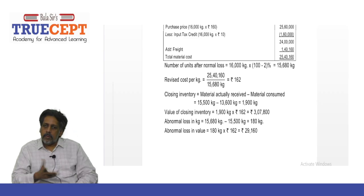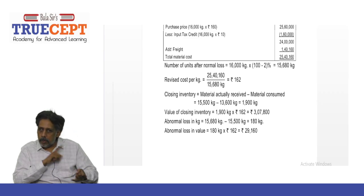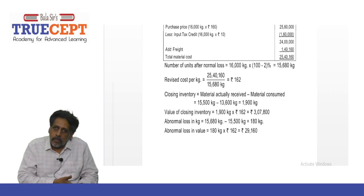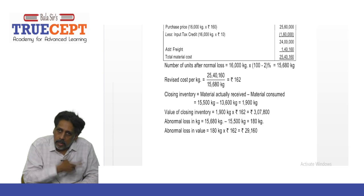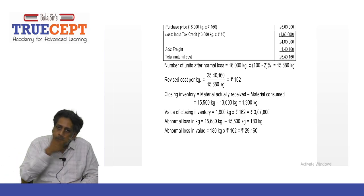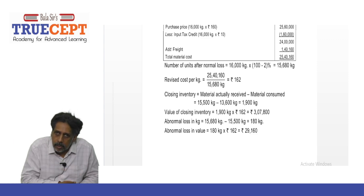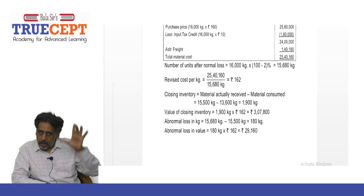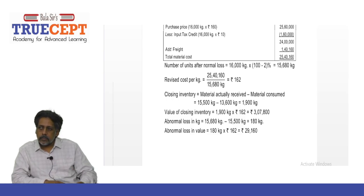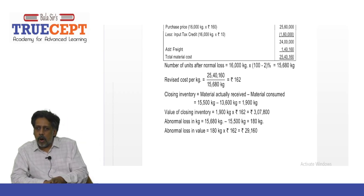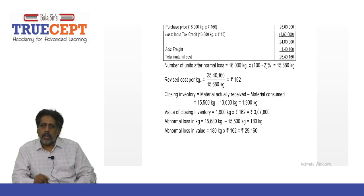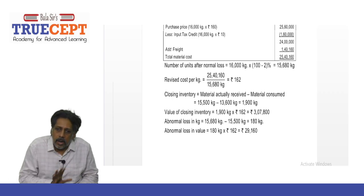Abnormal loss in kilograms: 180 kilograms into rupees 162 per kg = rupees 29,160. As per Accounting Standard 2, paragraph 13, any abnormal wastage of resources should be charged to the profit and loss account. This rupees 29,160 will be charged or debited to the profit and loss account — it is a loss to be borne by the enterprise, Anil Pharma.